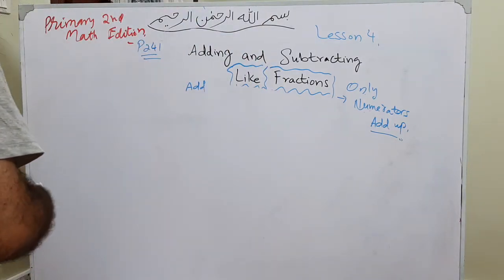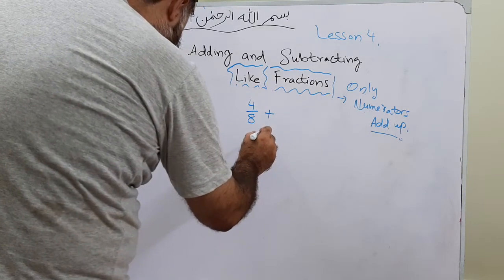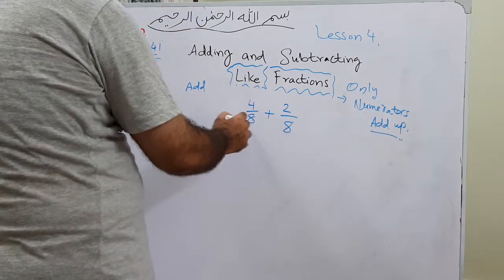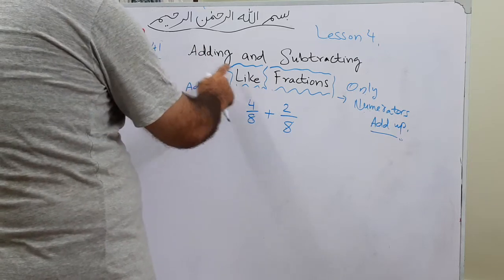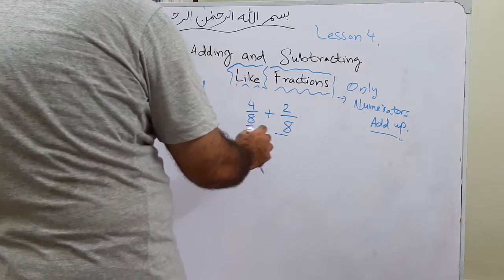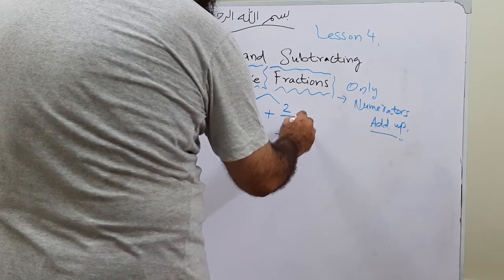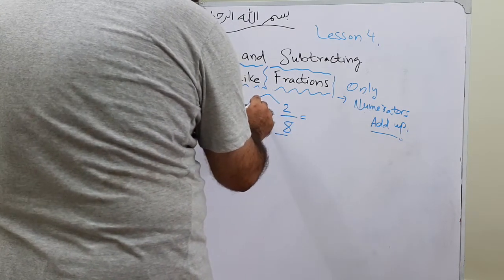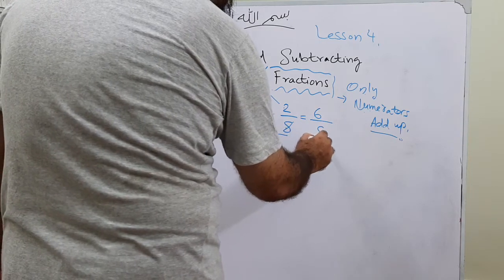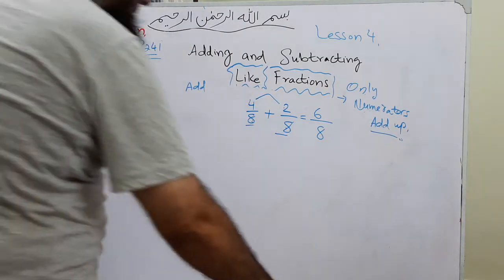Now part c: 4 over 8 plus 2 over 8. The denominators 8 and 8 are the same, so this is addition of like fractions. The rule: only numerators add up. 4 plus 2 is 6, and the denominator comes once — 6 over 8. When we add 4 over 8 and 2 over 8, we get 6 over 8.